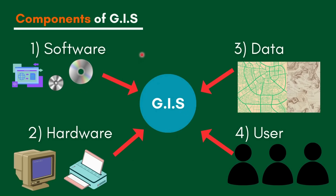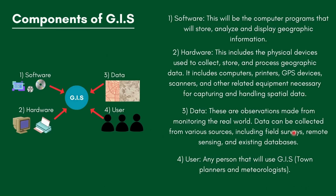There are four components of GIS. The first is software, the second is hardware, the third is data, and the fourth is the user. Software refers to the computer programs that store, analyze, and display geographic information. They won't ask you for specific software options, but they will ask you to define what software is.